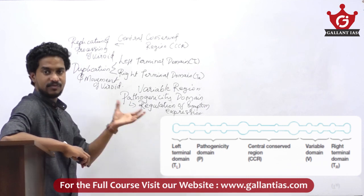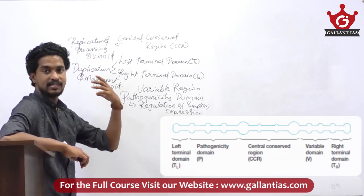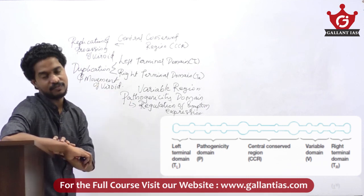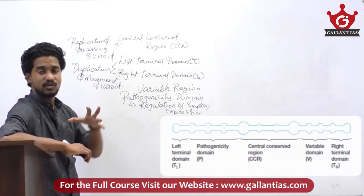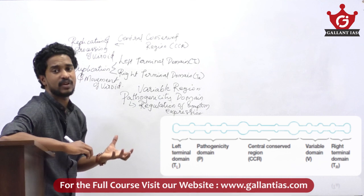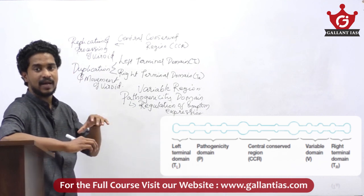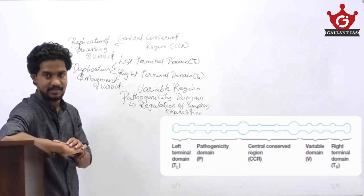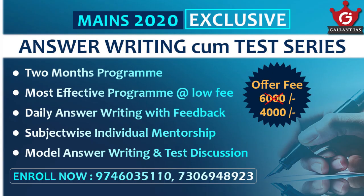Next we are discussing the replication of Viriodes. Replication of Viriodes is by a rolling circle mechanism.